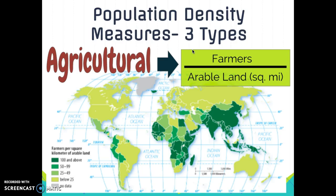The last type is agricultural density — the ratio of farmers to the amount of arable land. This reflects economic differences and level of development. Developed countries have very low agricultural densities because farming technology, such as tractors, herbicides, pesticides, and bioengineering, allows fewer farmers to feed many people. In less developed countries, agricultural density is higher because more manpower is needed to work the land due to lower levels of economic development.